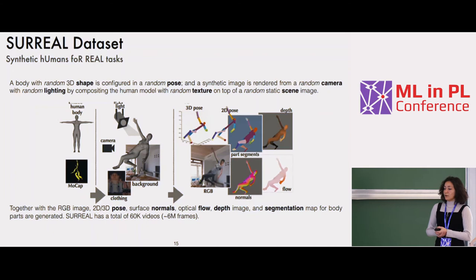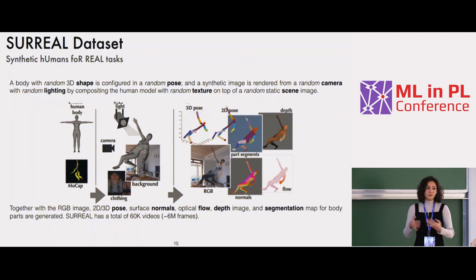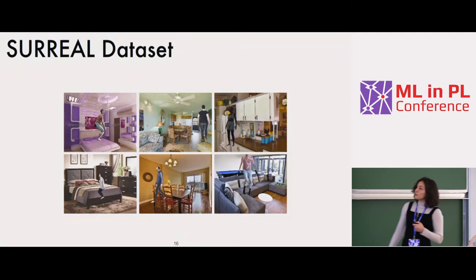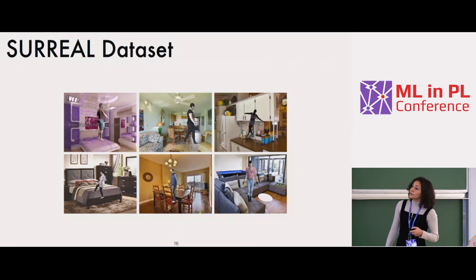It wasn't clear whether this was going to work — now it's more popular to use synthetic data, but back then we weren't sure how well a network trained on this data would perform on real data. We called this dataset SURREAL: Synthetic hUmans foR REAL Tasks. You can see that the images are clearly synthetic, but the assets come from real images — the background is real, and the clothes come from real scans with thousands of options.